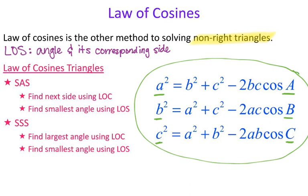There are two types of triangles we can use law of cosines for: SAS (side-angle-side) and SSS (side-side-side). Both have specific steps. For a side-angle-side, you find the missing side using law of cosines, then find the smallest angle using law of sines. We jump to law of sines because those ratios are a little easier to use — law of sines is just cross multiplication, as opposed to the more complex law of cosines formula.